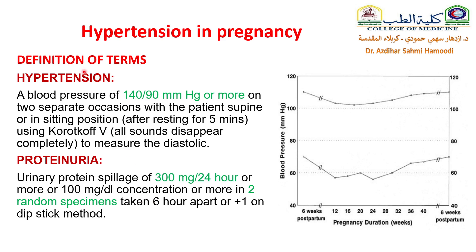Some definitions: What is hypertension? Hypertension is a blood pressure of 140/90 mmHg or more on two separate occasions, with the patient supine or sitting after resting for 5 minutes, using Korotkoff phase 5 — that is, when all sounds disappear completely — to measure the diastolic. What is proteinuria? Proteinuria is a urinary protein spillage of 300 mg per 24 hours or more, or 100 mg per deciliter concentration or more in two random specimens taken 6 hours apart, or 1+ on dipstick method.